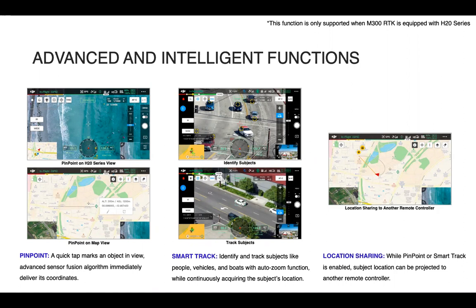Pinpoint, the name pretty much says it all there. It will place a pin that is geographically located, either using the map or the camera, and immediately get the coordinates of that pin and display it in 3D on your display. SmartTrack can identify and track different subjects while continuously acquiring the subject's location. And then location sharing - while Pinpoint or SmartTrack is enabled, location can be projected to another remote controller or viewed on the map.